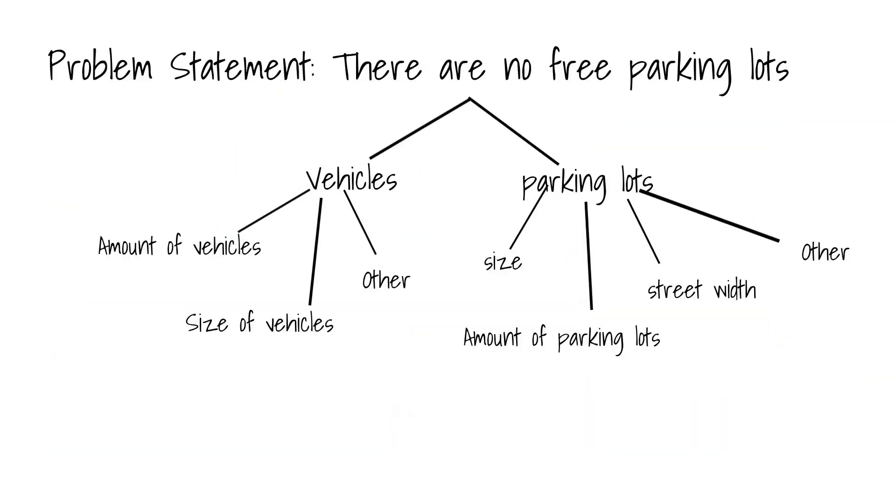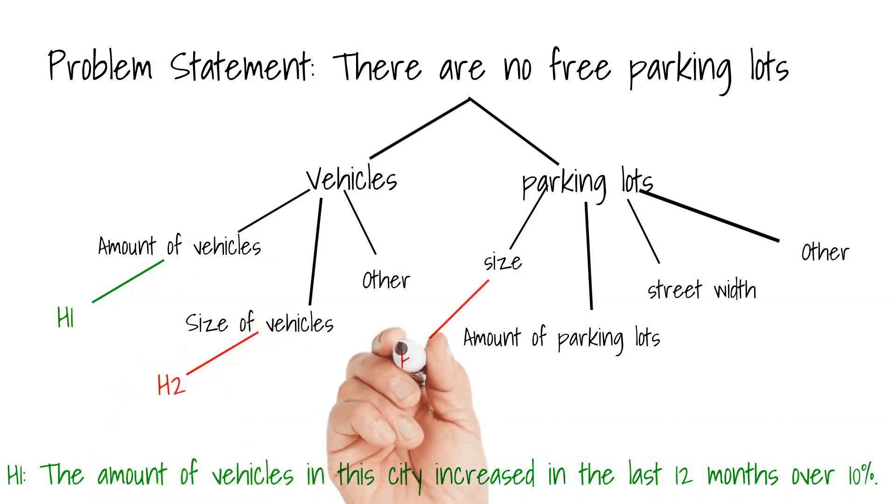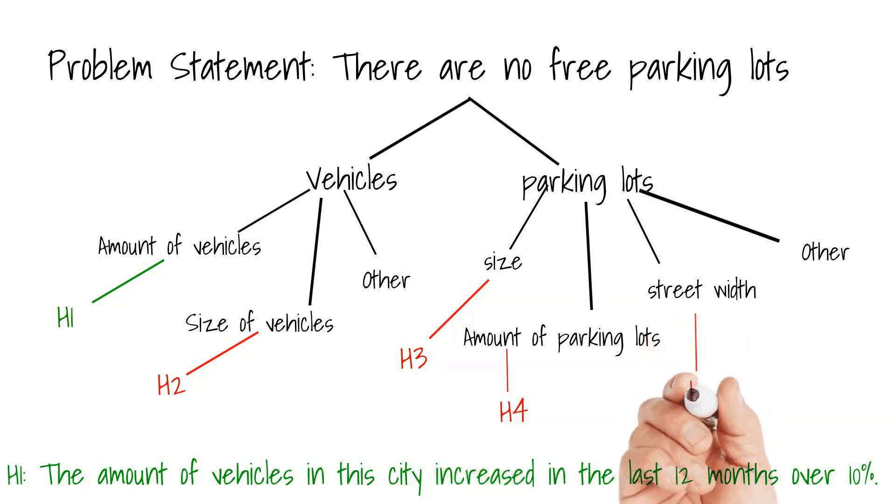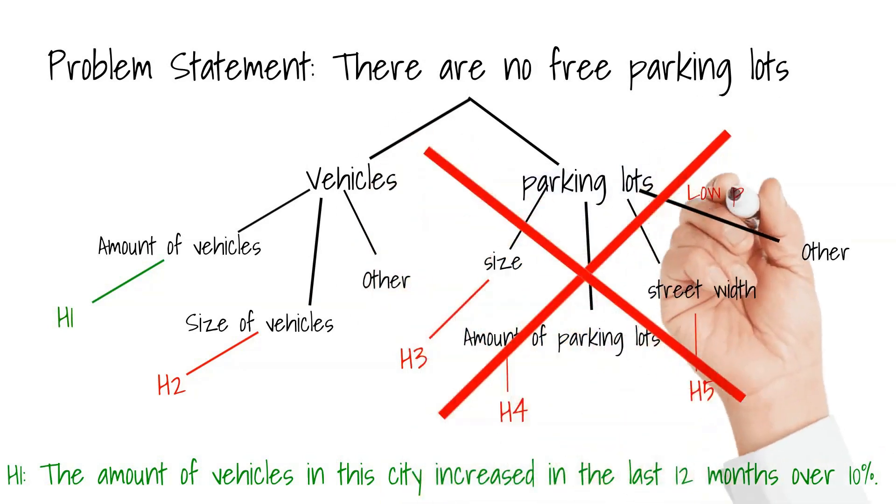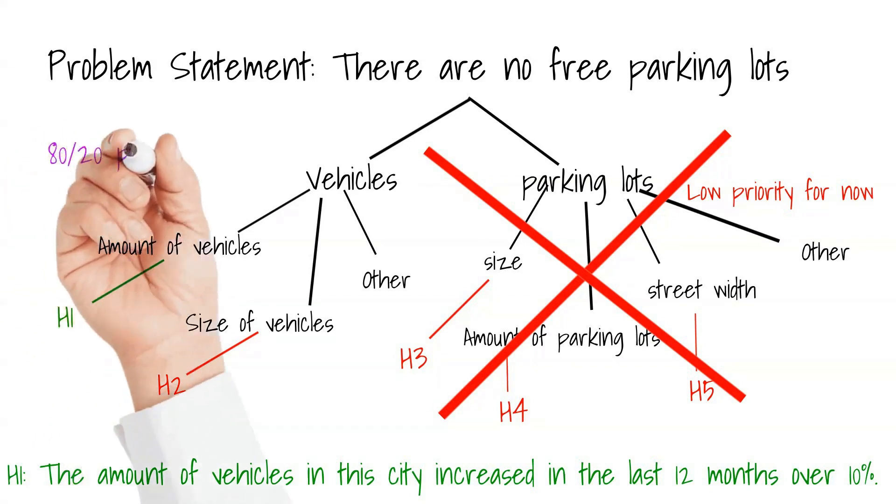Based on the leaves in the logic tree we could formulate the following hypothesis. An example: hypothesis one, the amount of vehicles in the city increased in the last 12 months over 10 percent. Now you can imagine we can formulate a hypothesis for every potential root cause, even multiple hypotheses for a single root cause. We can also prioritize hypotheses over another because the probability for each might be completely different. As per the Pareto or 80-20 principle, 20 percent of the possible root causes will lead to 80 percent of the symptoms.